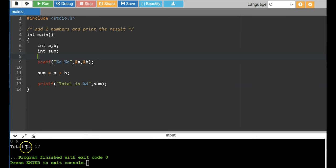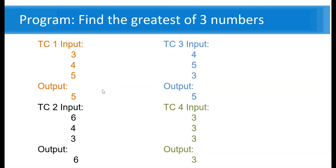Let's look at the second program: find the greatest of three given numbers. If 3, 4, 5 are given, output should be 5. If 6, 4, 3 are given, output should be 6. If 4, 5, 3 are given, output should be 5. If 3, 3, 3 are given, output should be 3. You see three inputs, so you read three integers a, b, and c. Again, don't hard-code the values — use scanf to read them. After reading, comes the main logic.